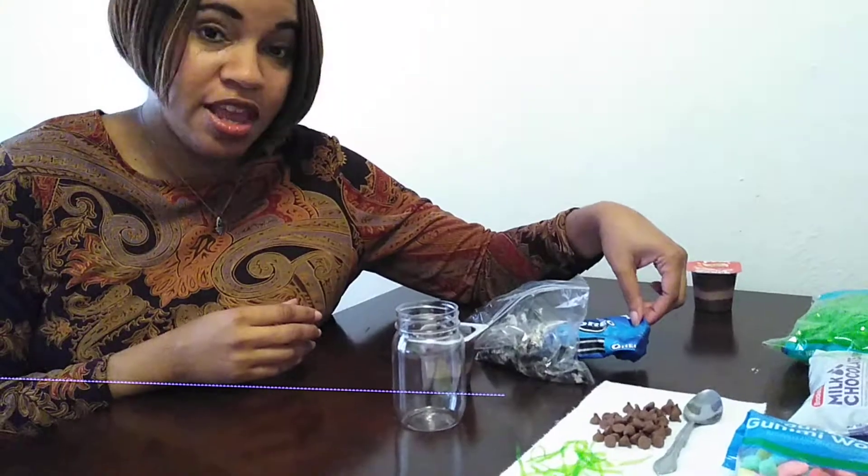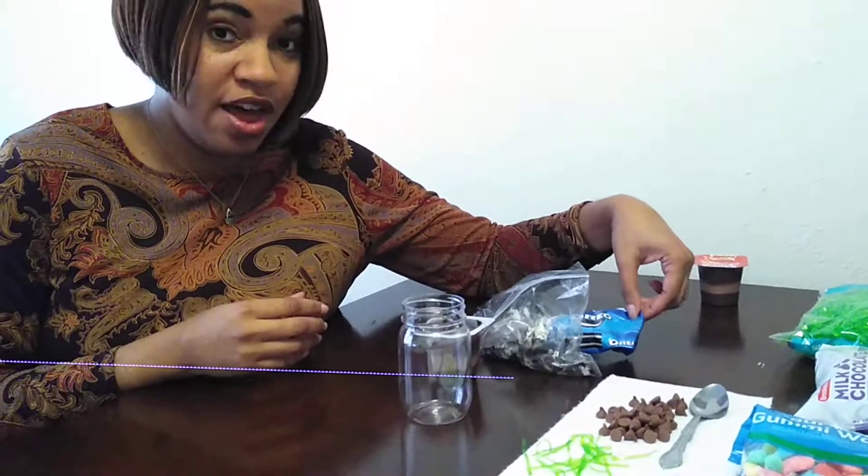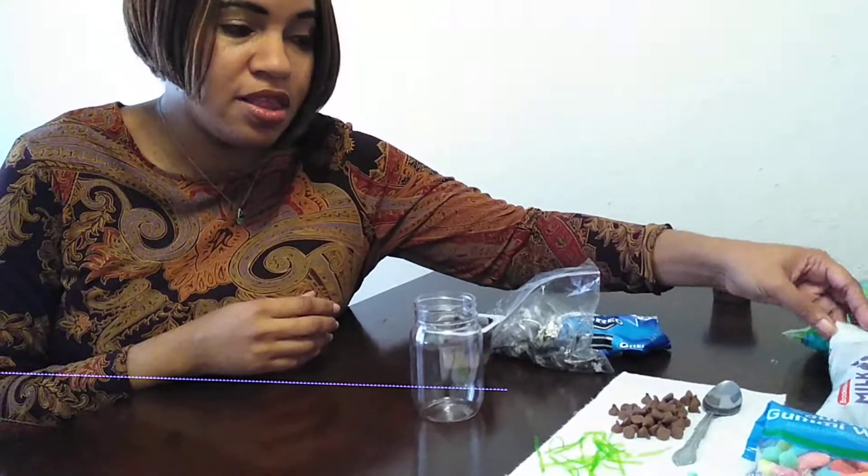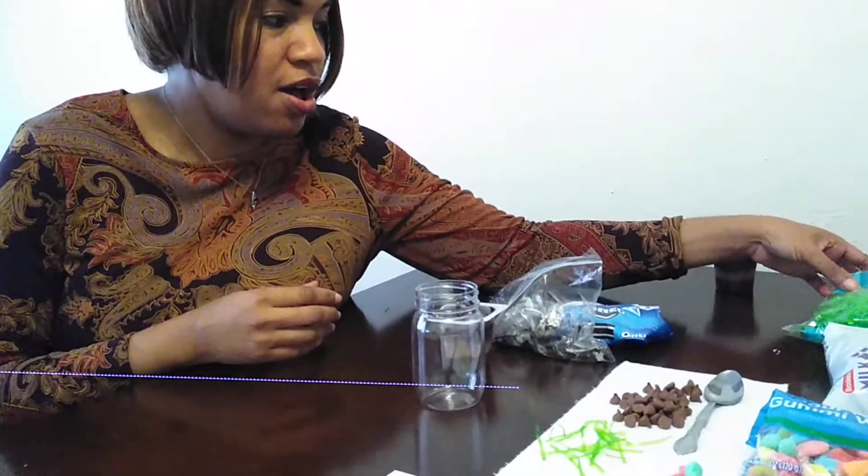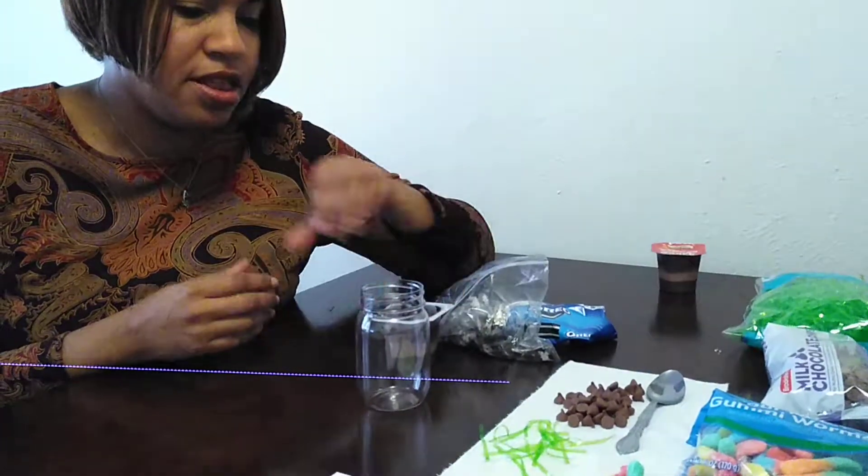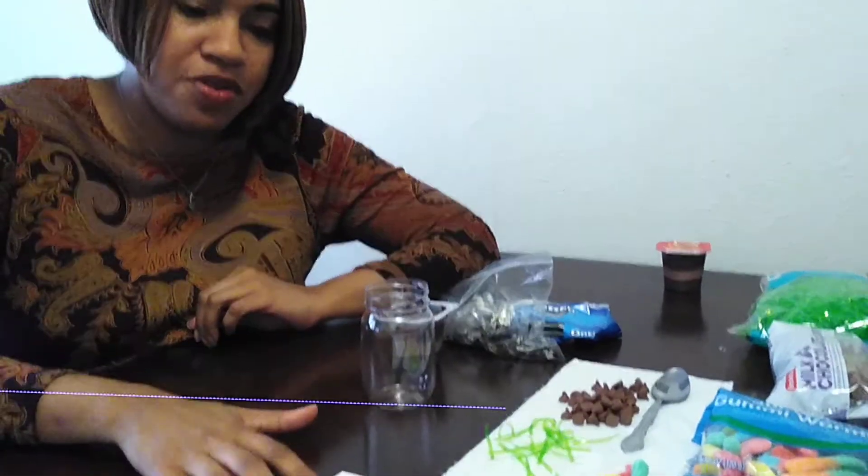So first we would need any type of cookies, which I like Oreo, so I have Oreo cookies, chocolate chip pieces, worms, some fake grass from Easter, and pudding. So here is also a picture of a diagram.